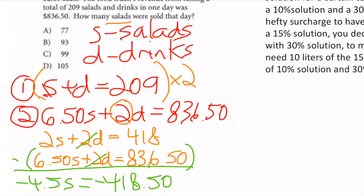Dividing by -4.50, I get S = 93. So the answer is B — they sold 93 salads that day.